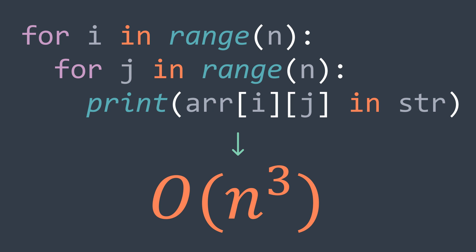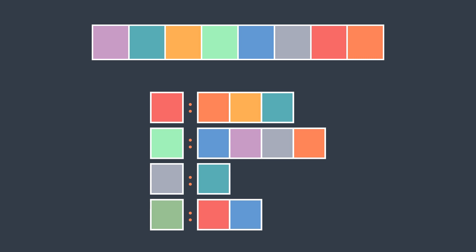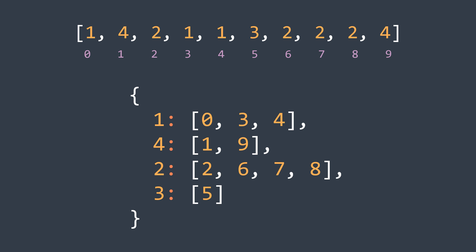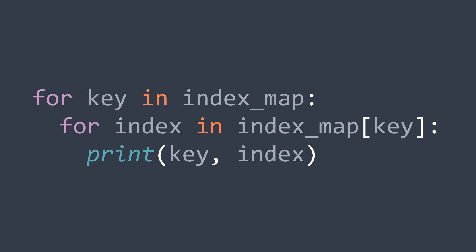Let's suppose that we have an array and a hash map where the key is an element in the array, and the value is an array containing the indexes where we can find it. For example, for this array, this is what the hash map would look like. Now we want to traverse it, so we would write something like this, which traverses the keys of the index map, and for each key we traverse its indexes.